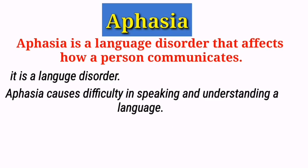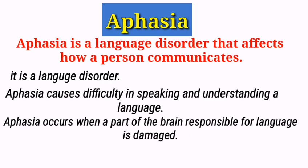There must be a question in your mind about how aphasia can occur. Aphasia is usually caused by damage to the language centers of the brain, which are typically located in the left hemisphere. The left hemisphere of our brain is responsible for language. If this part of our brain is damaged, then we face difficulties in using language — and in linguistics, it is called aphasia.